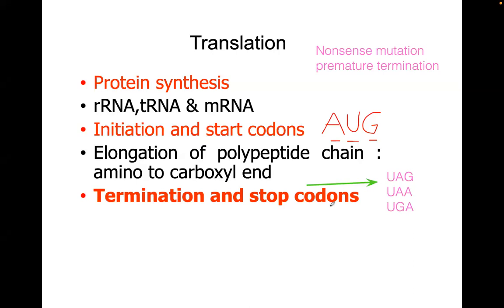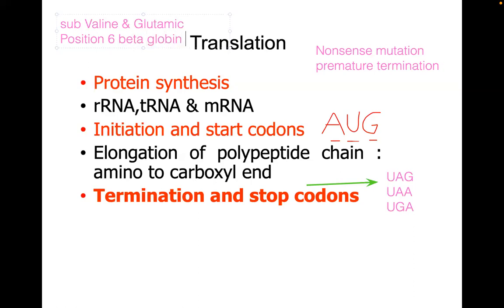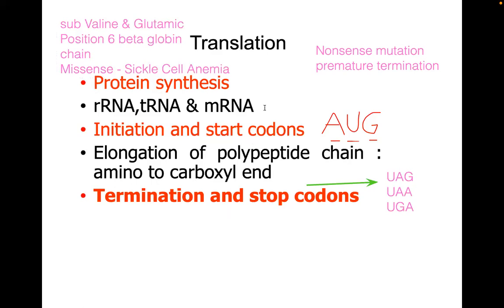A substitution of valine for glutamic acid at position six of the beta globin chain is a classic example of a missense or point mutation — this is classic sickle cell anemia.